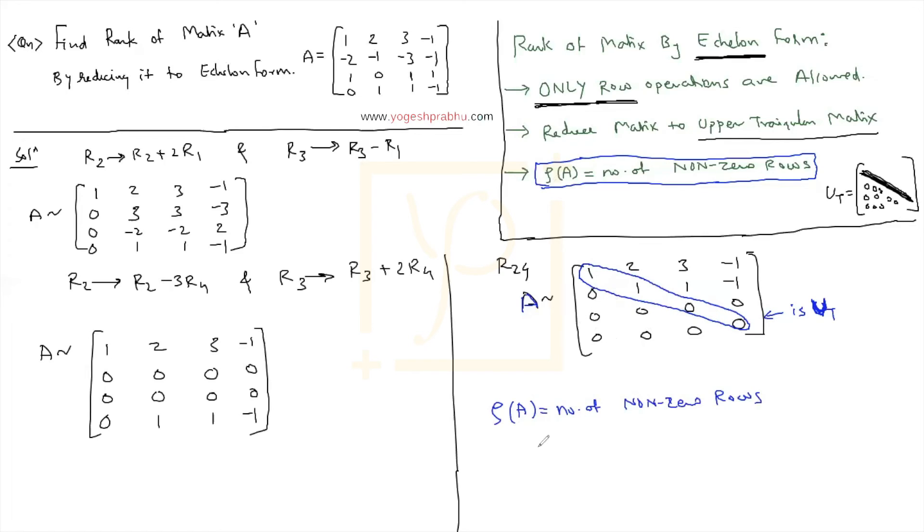But then third and the fourth row are all zeros. So there are two non-zero rows. First row and second row are non-zero. That is two. That's how I get the rank of A.